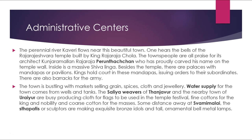The town is bustling with markets selling grain, spices, cloth and jewelry. Water supply for the towns comes from wells and tanks. The Sali weavers of Tanjavur and the nearby town of Urayur are busy producing cloth for flax to be used in temple festivals — fine cottons for the king and nobility, and coarse cottons for the masses. Some distance away at Swamimalai, the thalpatis or sculptors are making exquisite bronze idols and tall ornamental bell metal lamps.